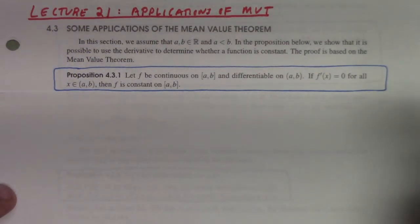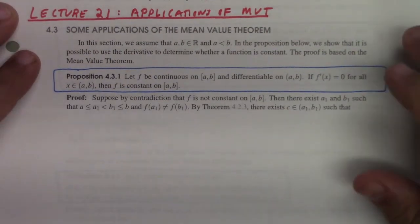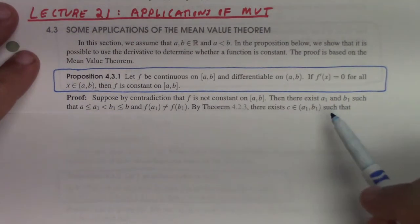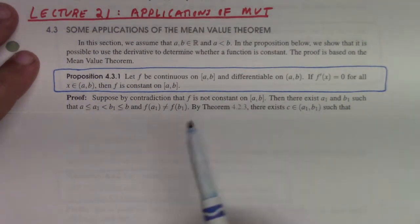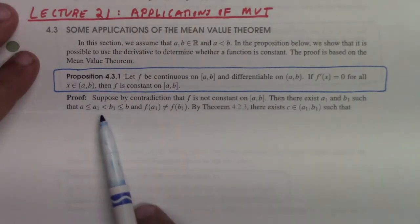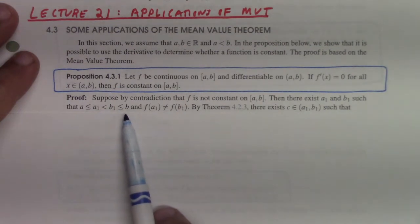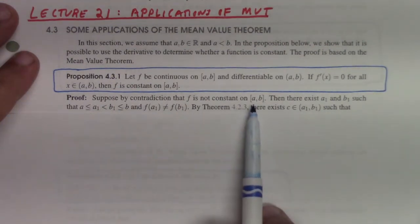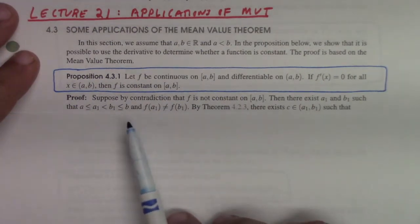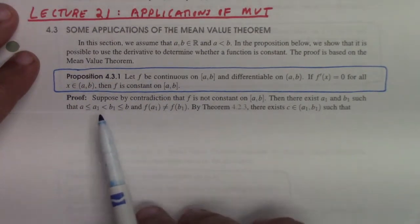The proof is by contradiction. Suppose f is not constant on (a, b). Then there exist a₁ and b₁ with a₁ < b₁, where a ≤ a₁ and b₁ ≤ b since they're in the closed interval, and we assume f(a₁) ≠ f(b₁), towards the contradiction.